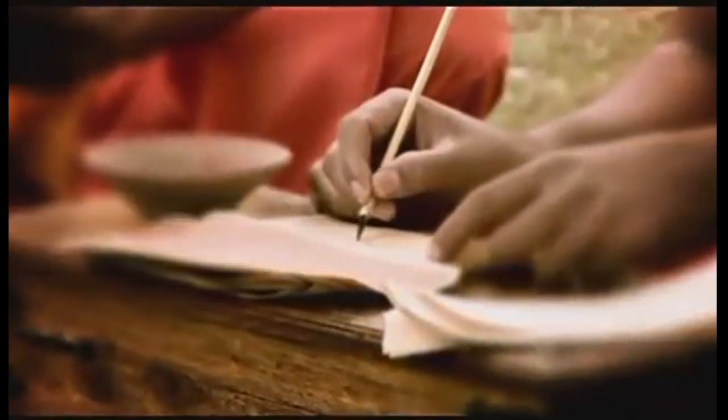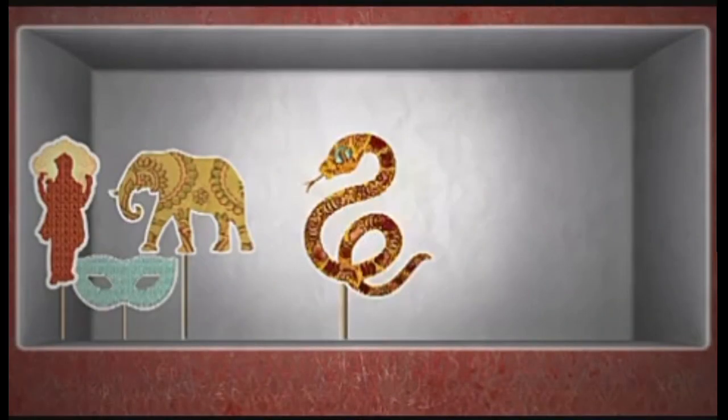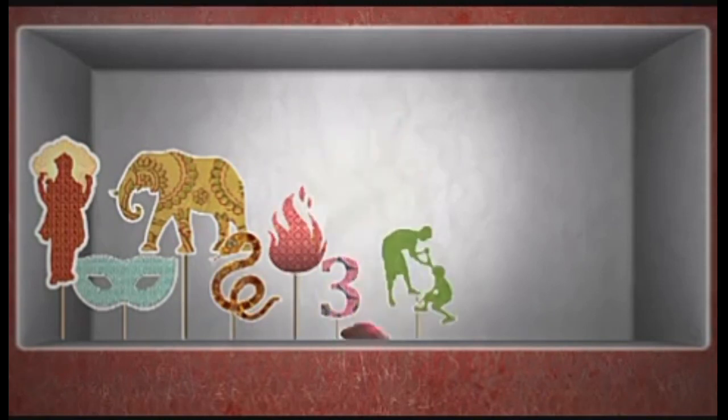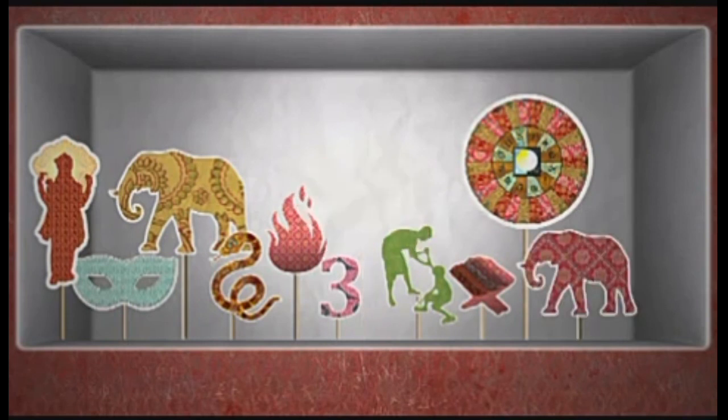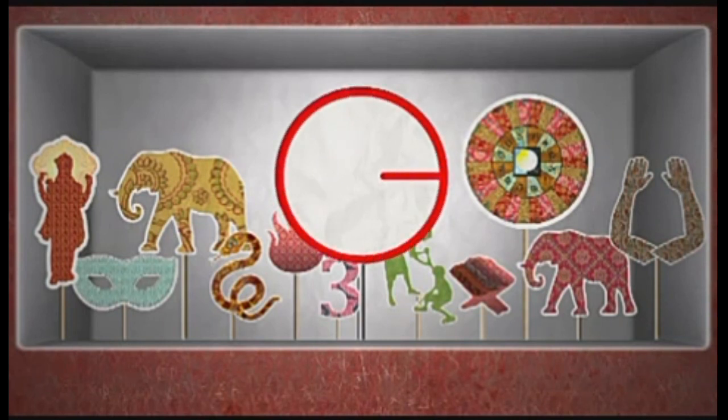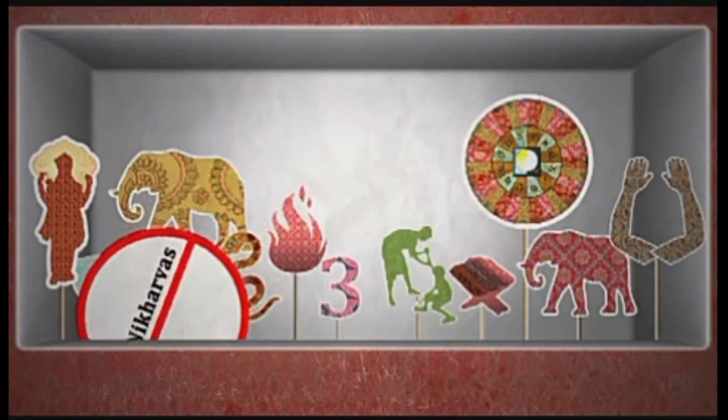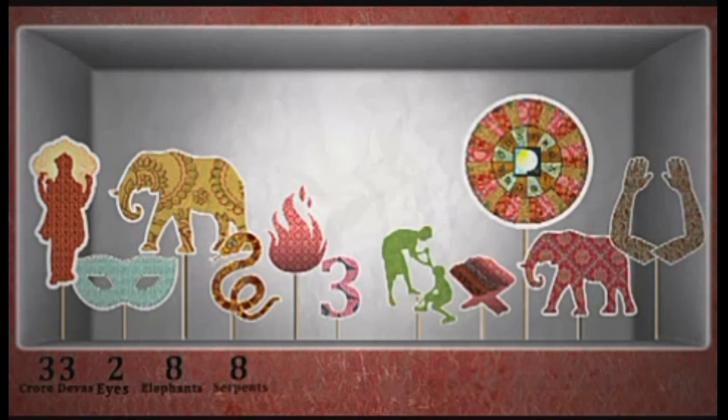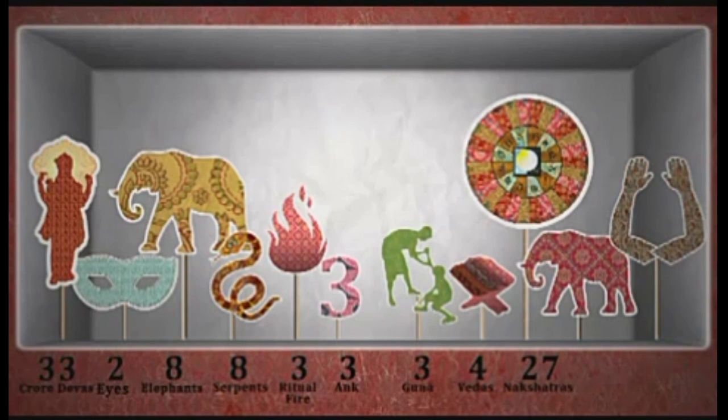Now these mathematicians also coined a fun way to remember this value of π using a poem. First, let's take a look at the poem: 'Gods, eyes, elephants, serpents, fires, three qualities, Vedas, Nakshatras, elephants, arms. The wise have said that this is the measure of the circumference when the diameter of the circle is nine Niyutas.' Sounds incomprehensible? Well, let's break it up step by step. First, there are 33 crores of Devas or gods, two eyes, eight elephants, eight serpents, three kinds of ritual fires, three Gunas or qualities, four Vedas, 27 Nakshatras, and eight elephants again, and two arms.